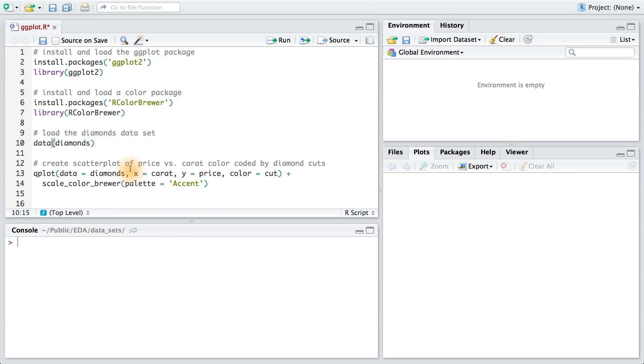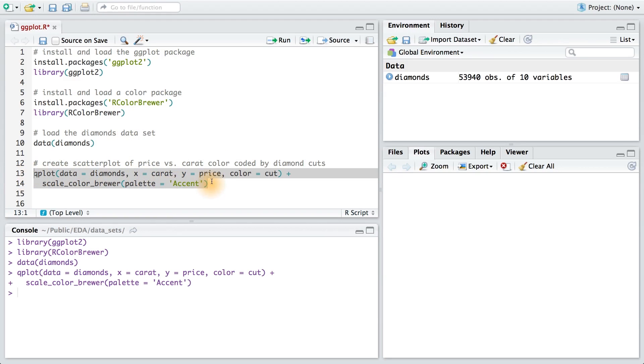I just want to show you how a few lines of code can create amazing graphics. I'm going to load up the ggplot library and a color library. Then I'm going to load the diamonds dataset. And with this function, I'll create a scatter plot.